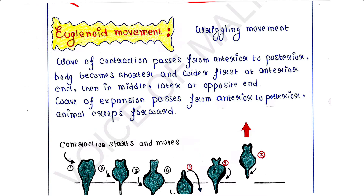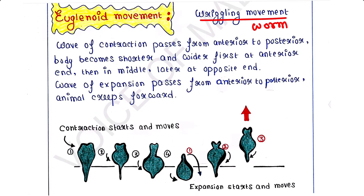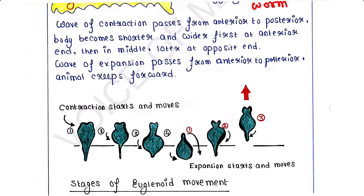Next is euglenoid movement, also called wriggling motion or wriggling movement. It is a motion like a worm. In this motion, a wave of contraction passes along the body from the anterior to the posterior end.